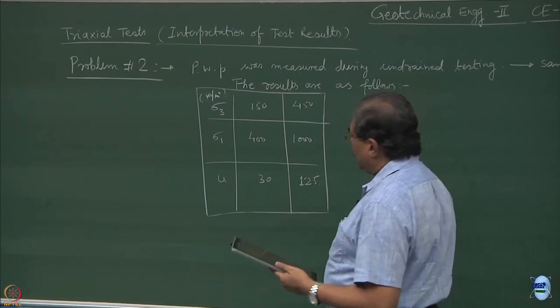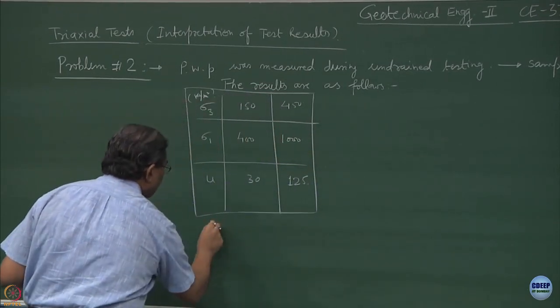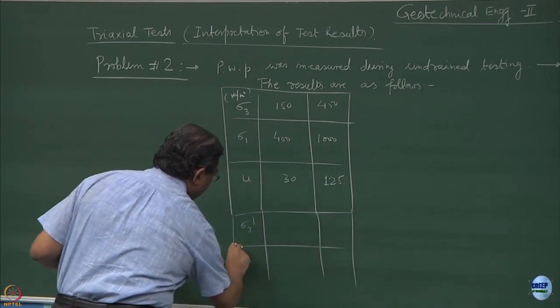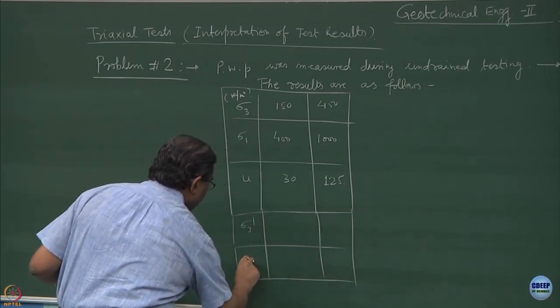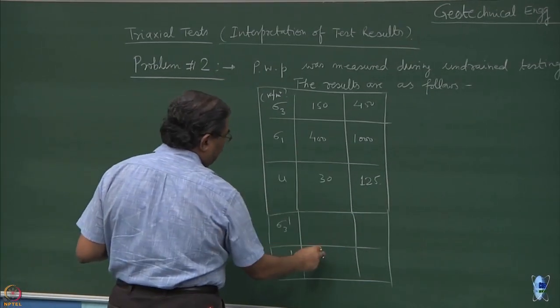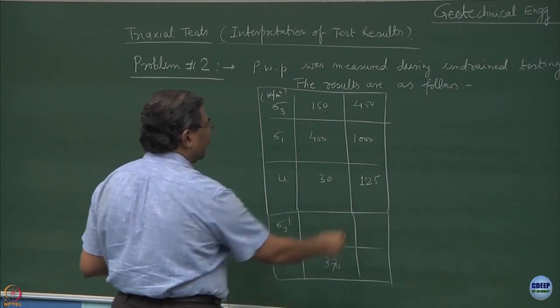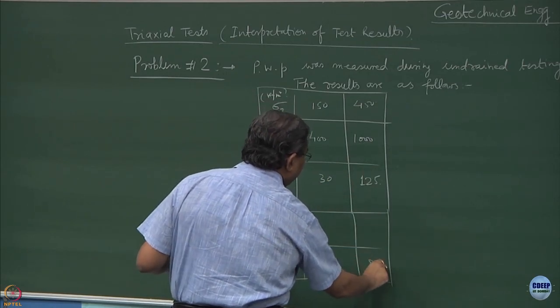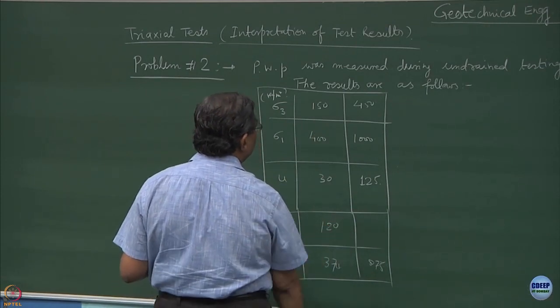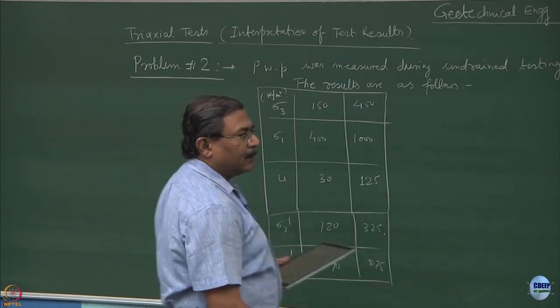Sigma 1 is known: 400 and 1000. The pore water pressures are given as 30 and 125. It indicates the pore water pressures are positive. This is a straightforward problem, I hope you can solve this. There's nothing much complicated.